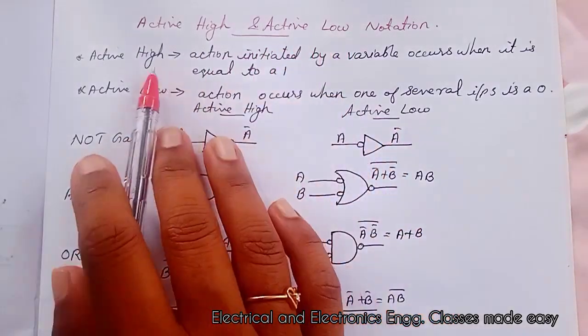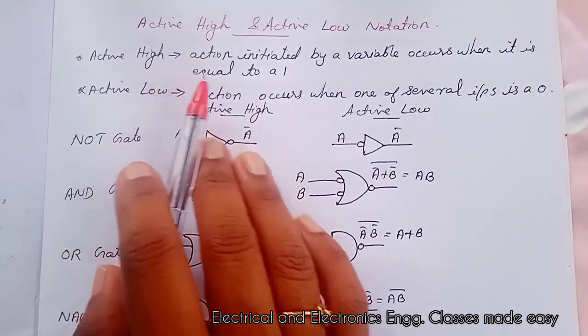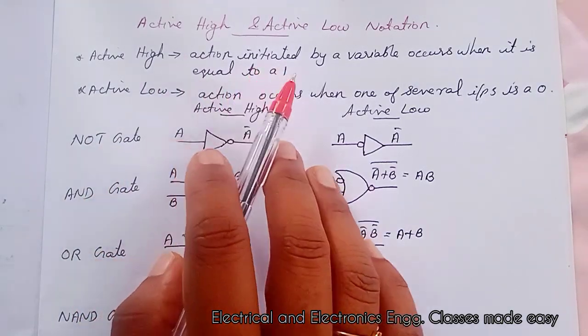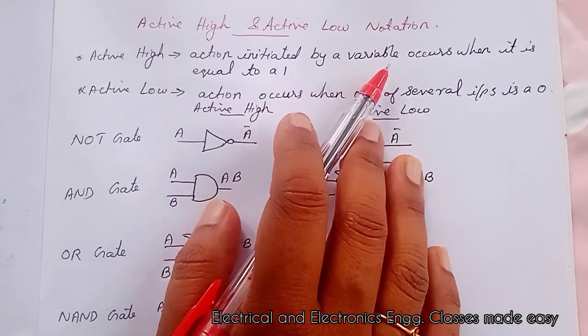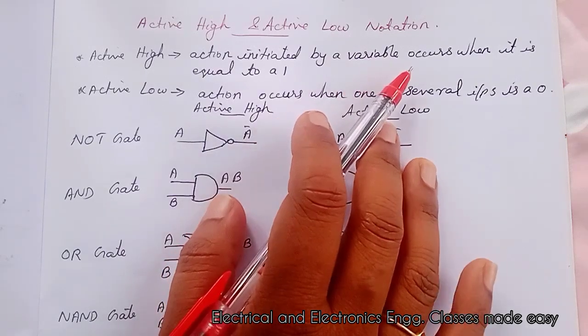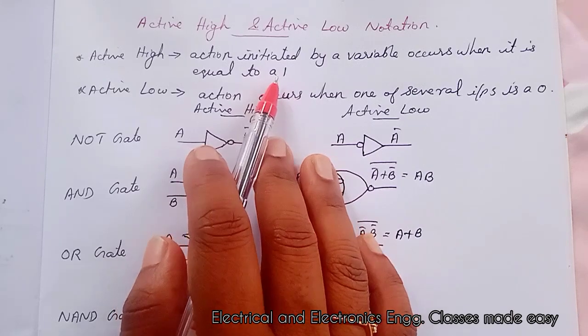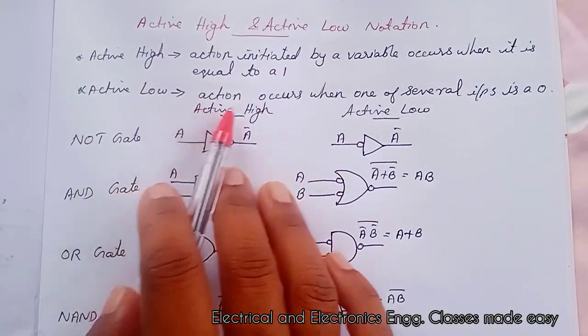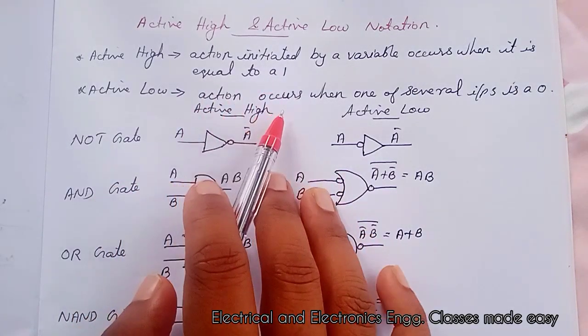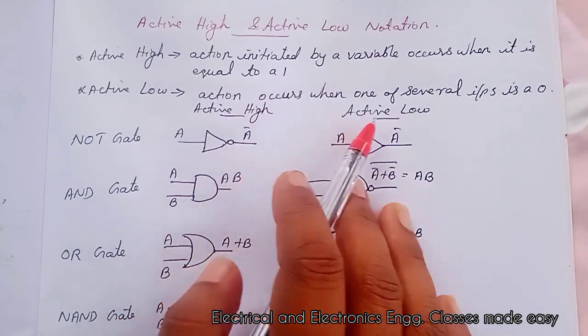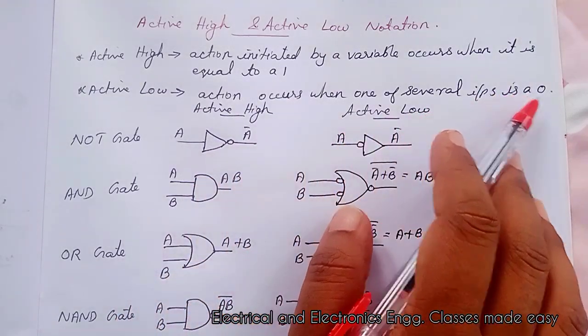Active high means the action represented or initiated by a variable occurs when it is equal to 1. And active low means the action occurs when one of the several inputs is 0.